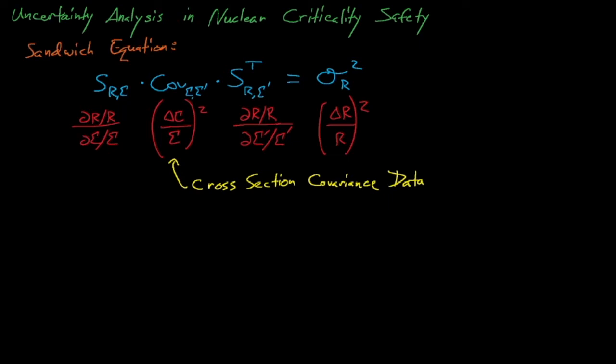Again, we must use the cross-section covariance data in this expression instead of just multiplying the sensitivity coefficients by each cross-section's uncertainty because the cross-section uncertainty is actually represented by a 2D covariance matrix of correlated uncertainties.